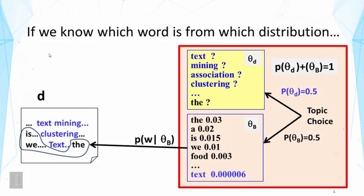That would mean, for example, these words the, is, and we are known to be from this background word distribution. On the other hand, the other words, text mining, clustering, etc., are known to be from the topic word distribution. If you can see the color, then these are shown in blue. These blue words are assumed to be from the topic word distribution.